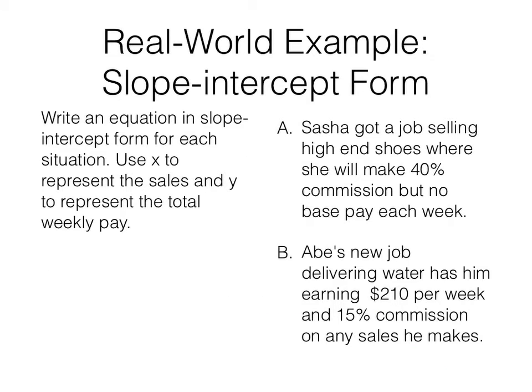So first let's look at a couple real-world examples of slope-intercept form. We're going to write a couple equations. Write an equation in slope-intercept form for each situation. Use x to represent the sales and y to represent the total weekly pay. Sasha got a job selling high-end shoes, expensive shoes, where she'll make 40% commission but no base pay each week.